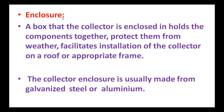The next component is the enclosure. A box encloses the collector and holds all the components together, protecting them from weather and facilitating installation on a roof or appropriate frame. The components held inside include the transparent cover, absorber plate, tubes, and insulating material. The collector enclosure is usually made from galvanized steel or aluminum material.